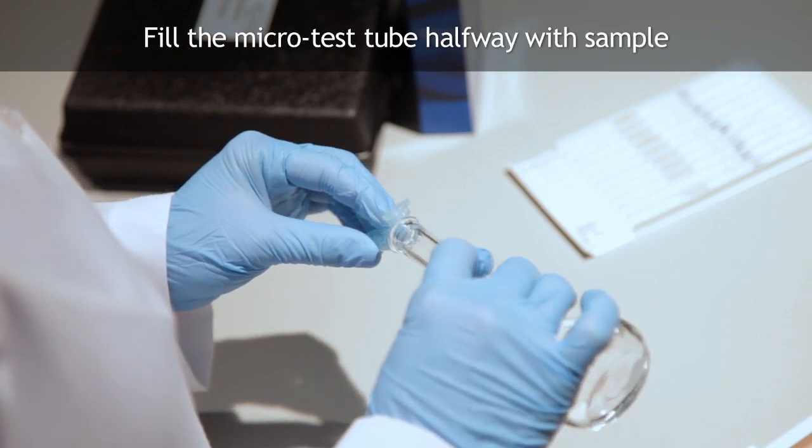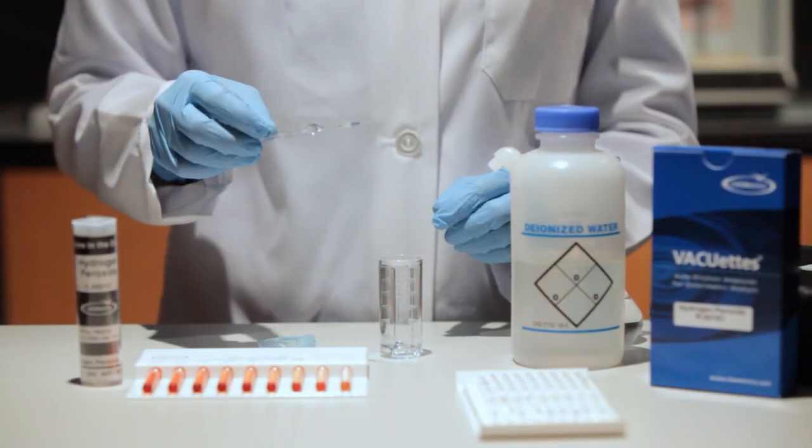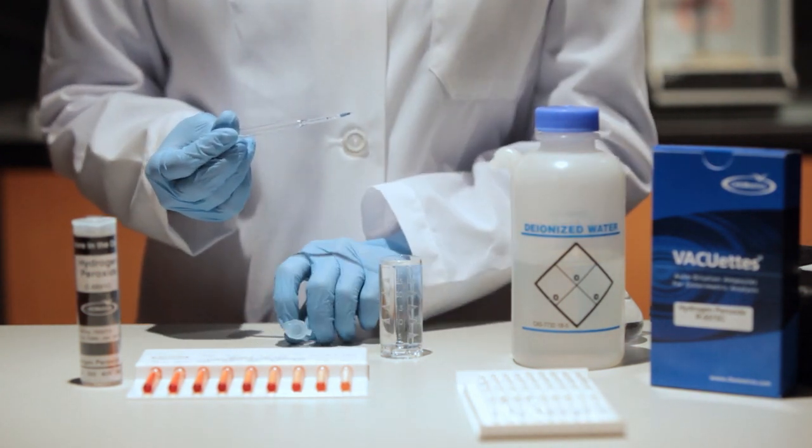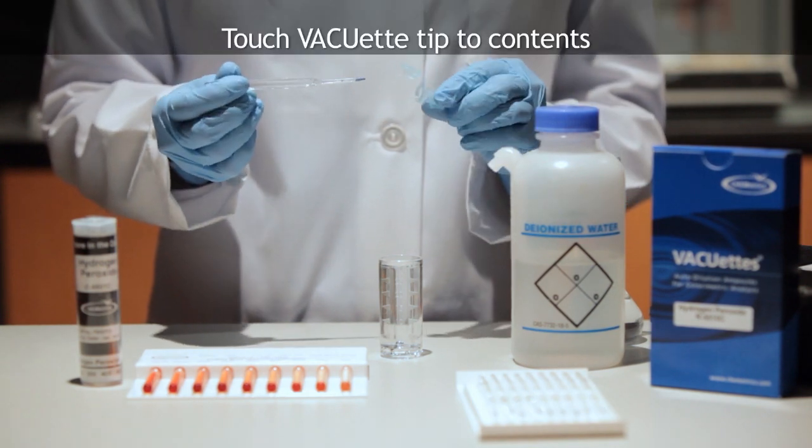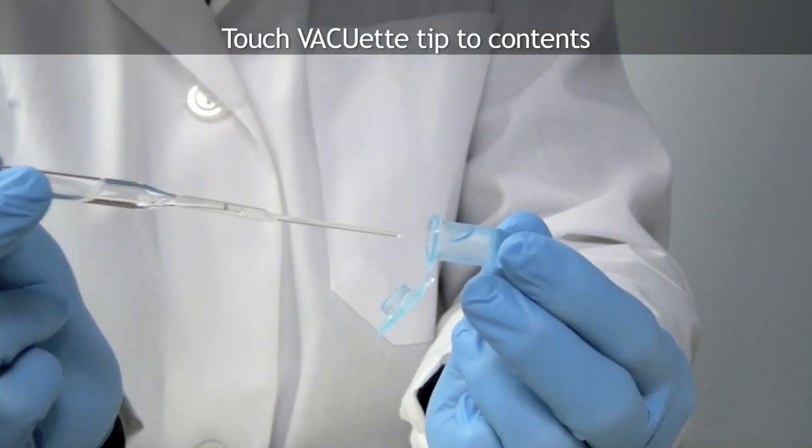Fill the microtest tube approximately halfway with the sample to be tested. Making sure that the VACUETS tip is firmly attached to the ampule tip, hold the ampule in a horizontal position and touch the tip to the contents of the microtest tube. The capillary tip will fill completely with sample.